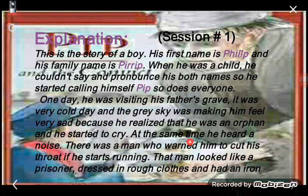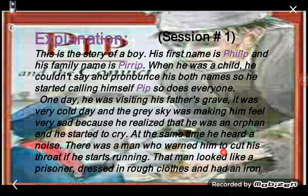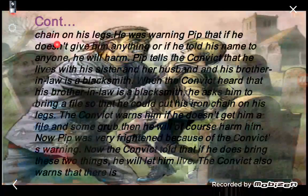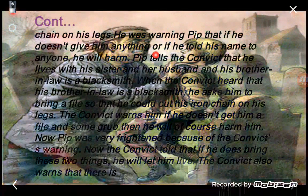At the same time he heard a noise. There was a man who warned him to cut his throat if he started running. That man looked like a prisoner — convict means prisoner — dressed in rough clothes and had an iron chain on his legs.